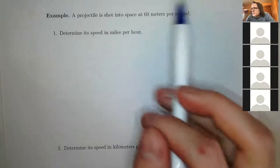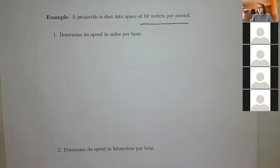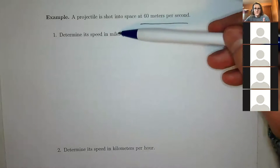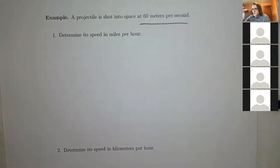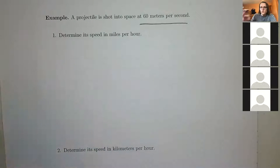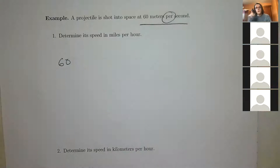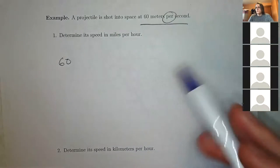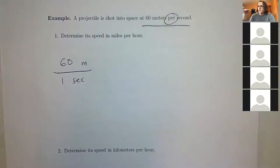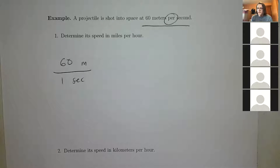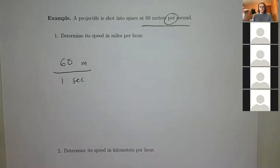New problem: a projectile is shot into space at 60 meters per second. Determine its speed in miles per hour. We need two conversions: meters to miles, and seconds to hours. Write the starting rate: 60 meters over 1 second. To convert meters to miles, I'll go meters → feet → miles using the sheet: 1 foot = 0.3048 meters.